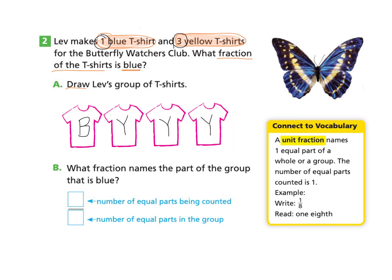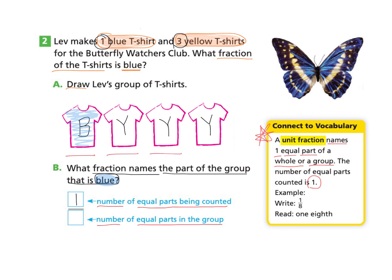Now we can move on to part B: What fraction names the part of the group that is blue? Let's take a look at our connective vocabulary. A unit fraction names one equal part of a whole or a group — the number of equal parts counted is one. For example, write one over eight and read it as one eighth. The number of equal parts being counted is one — only the shirt labeled B for blue. The number of equal parts in the group is four, so we write one over four and read this as one fourth.